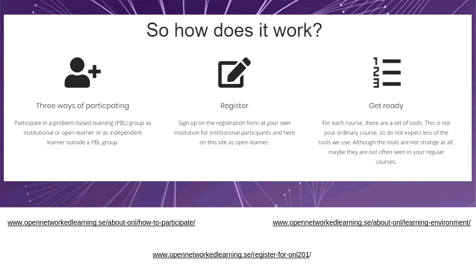So, how does this course work? There are three ways of participating. The first group are teachers or faculty and staff at the partner universities — we have 12 to 15 partner universities for each term, and the course runs twice a year. Each partner university sends a number of participants; each university has six spots. We call them the institutional participants — they are faculty at the partner universities. For each PBL group, which has eight spots, we also have two spots open for open learners who have no affiliation to the partner universities.